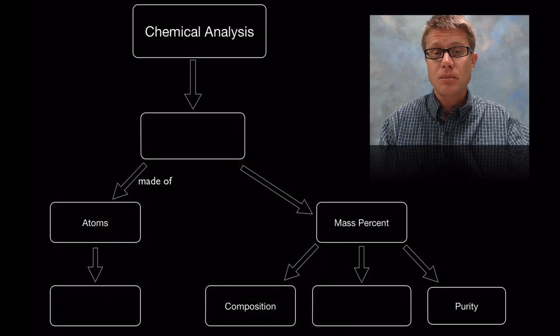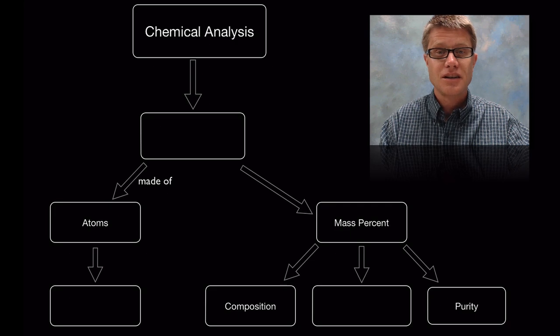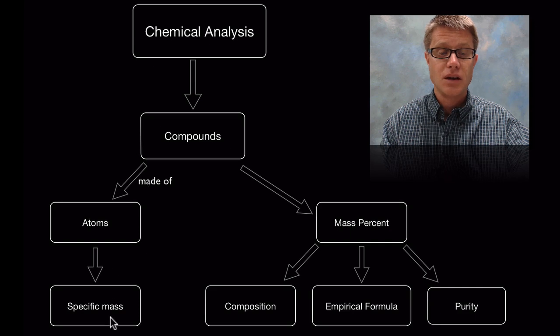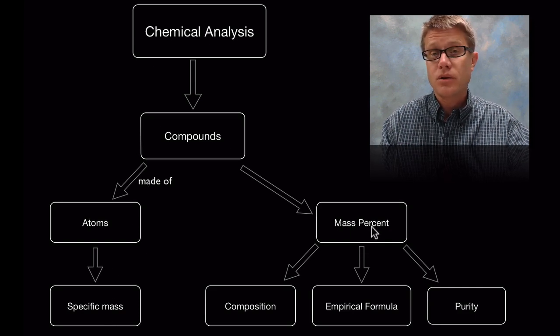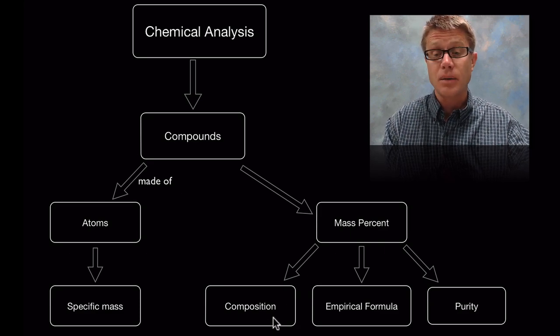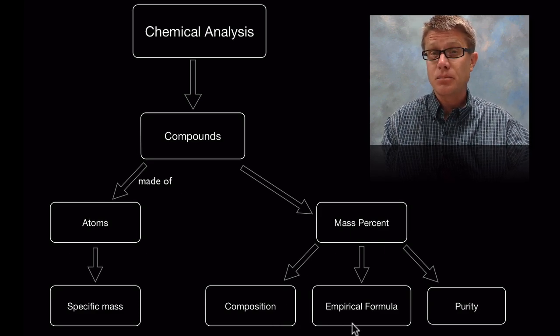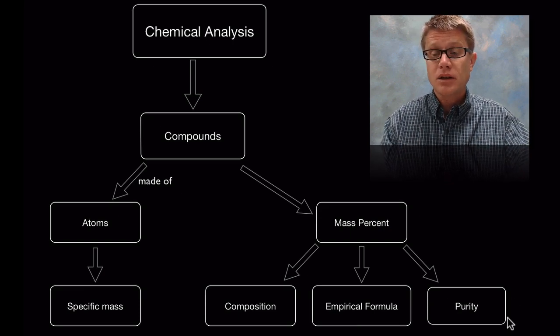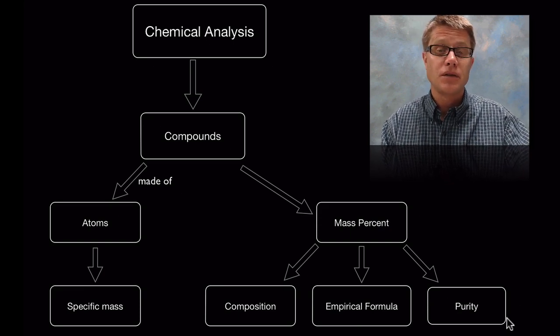So could you fill out this concept map? Could you pause the video right here? Okay. Let's go through it. So chemical analysis is used on compounds which are made of atoms. Each of those atoms have a specific mass. Remember we can therefore use the mass percent to figure out the composition. In other words what is in the compound. We could use that to figure out the empirical formula which is the simplest whole number formula. And then we could also use that to figure out the purity of that substance.